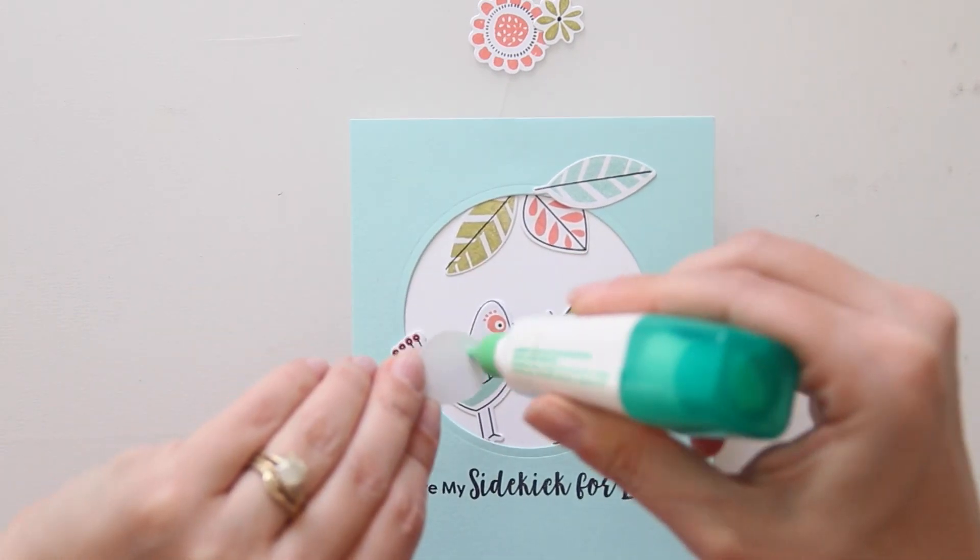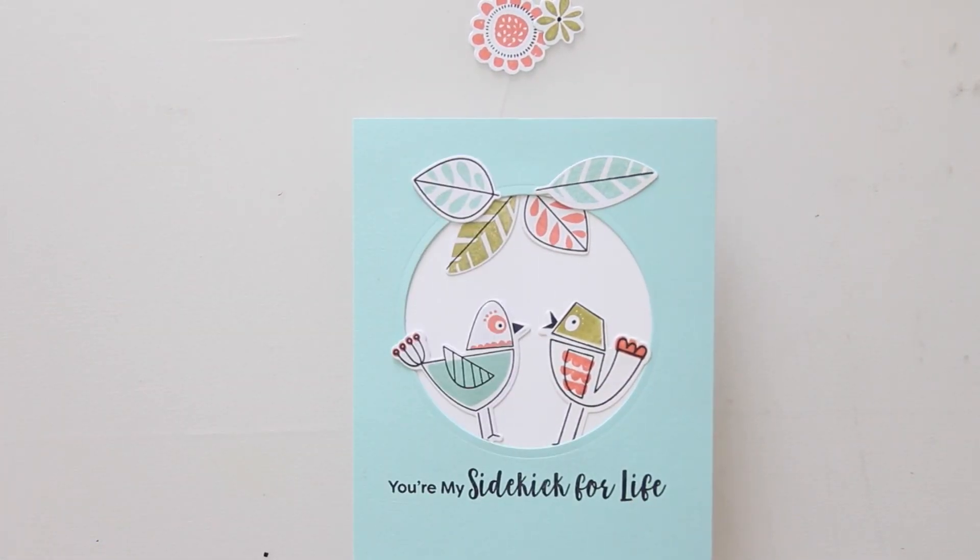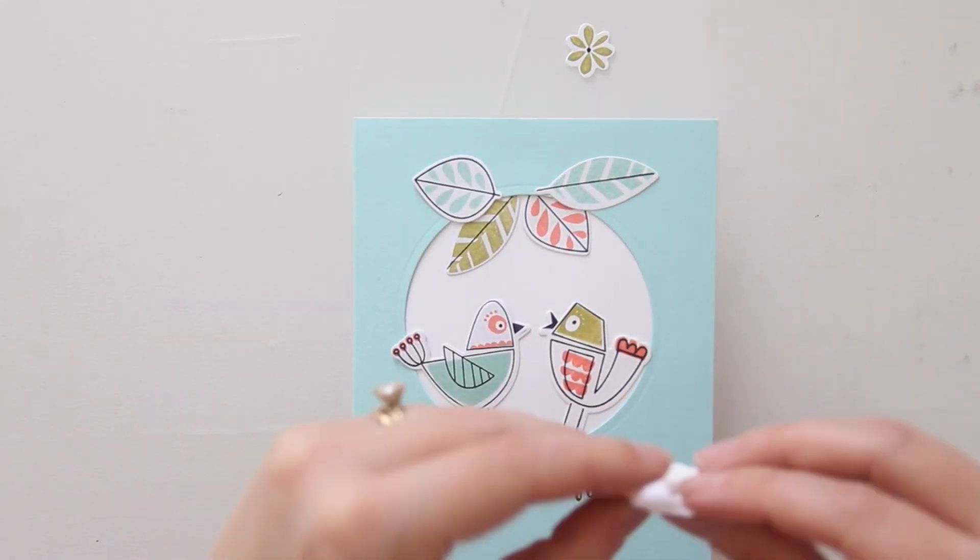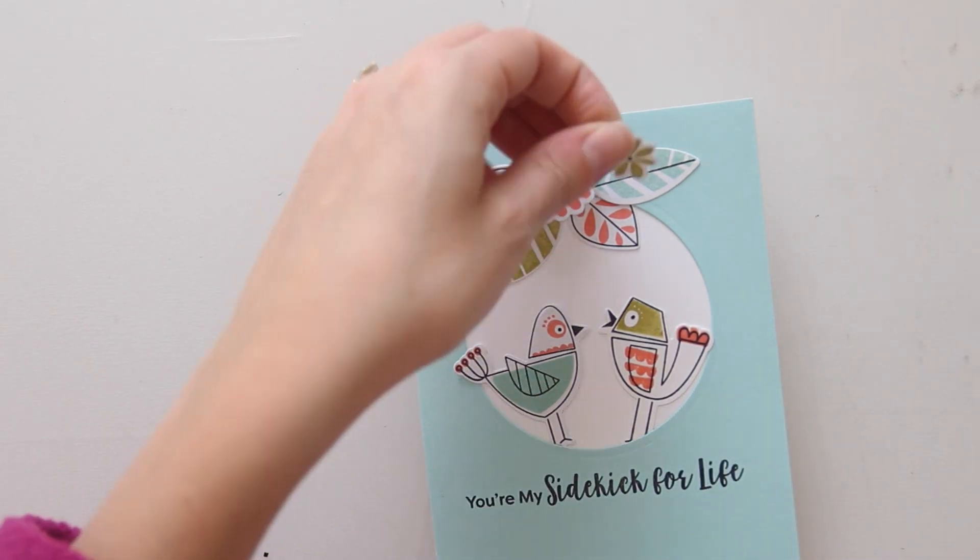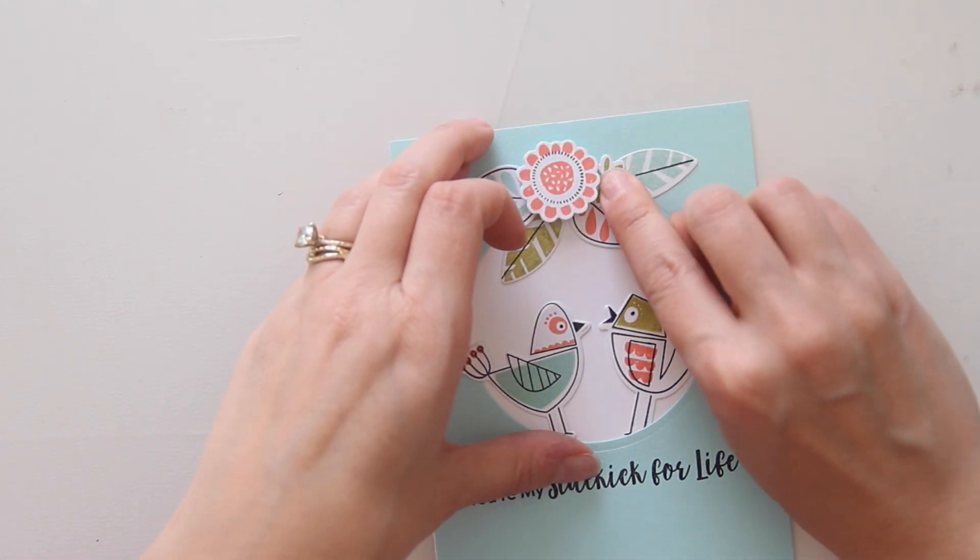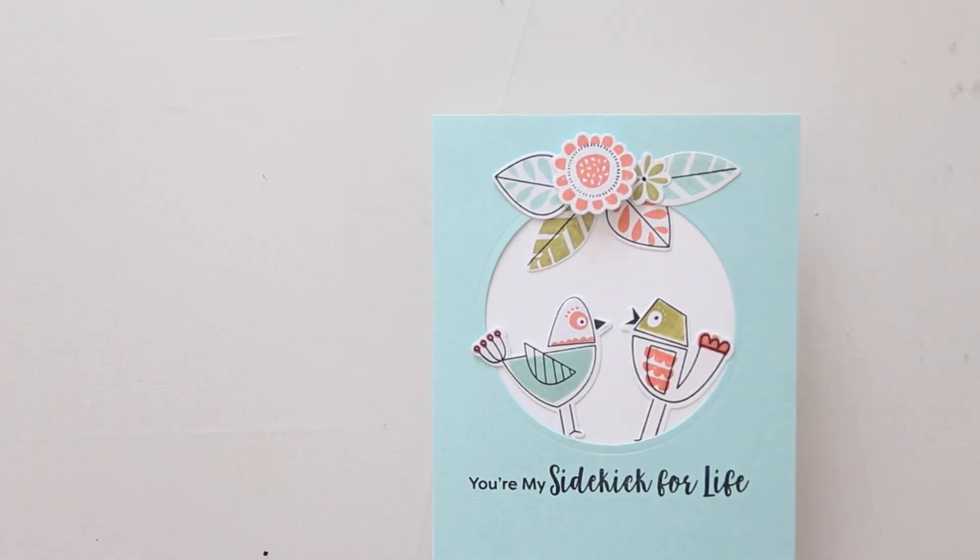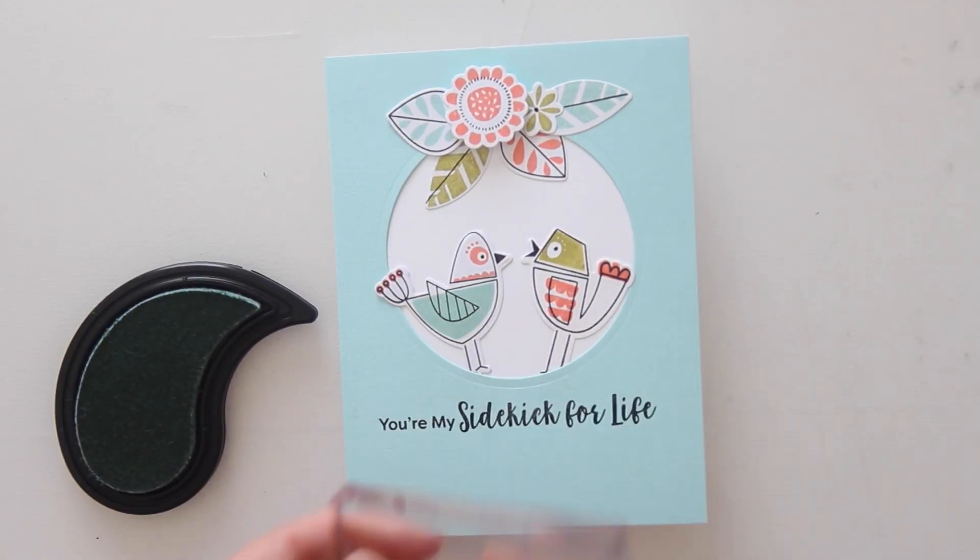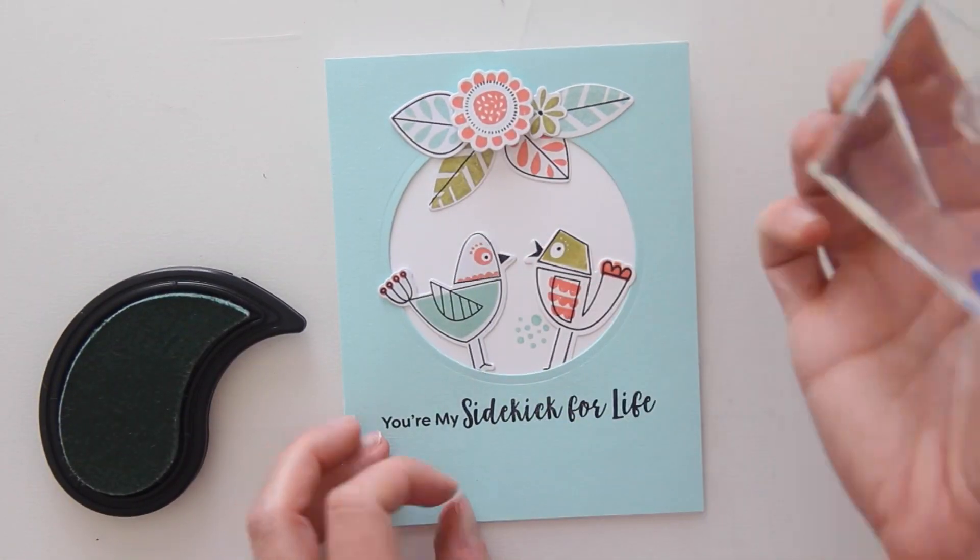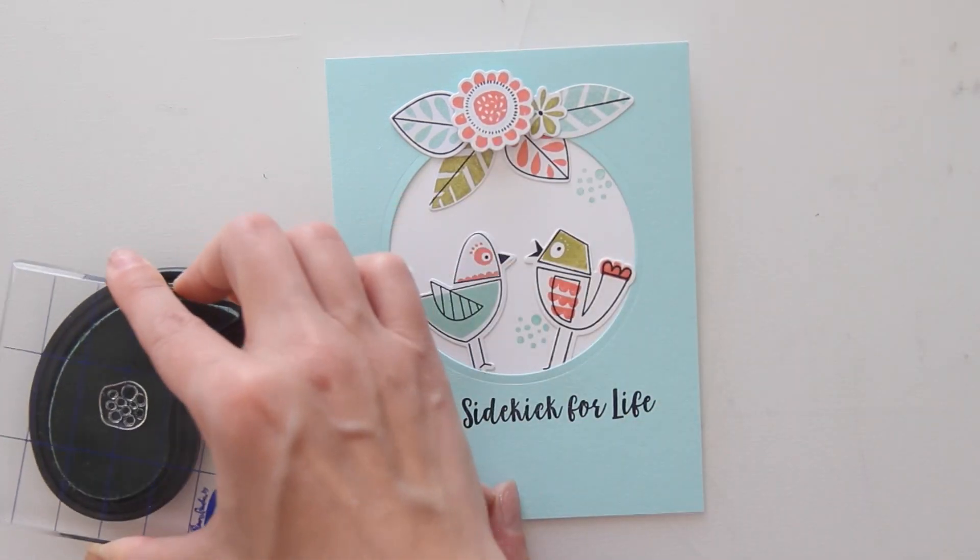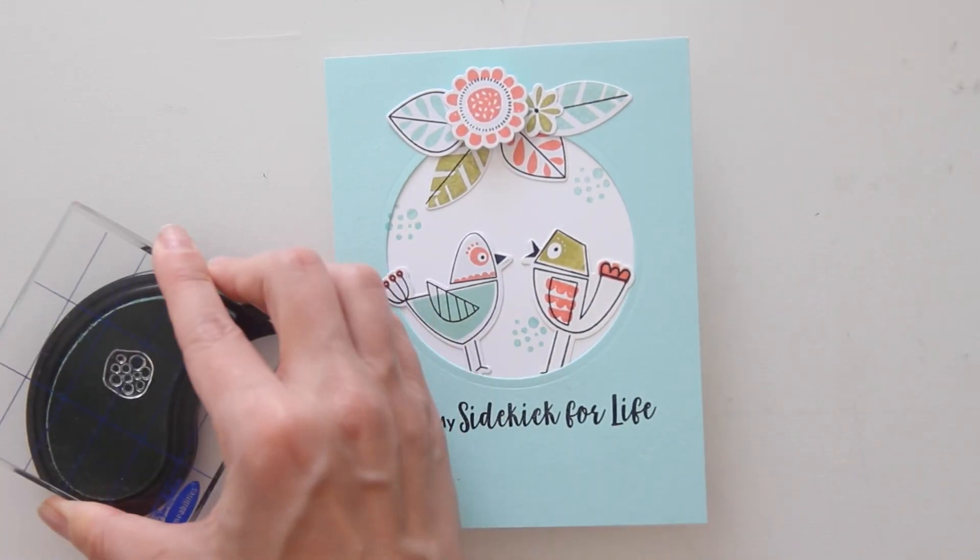There's an extra little stamp that comes in this stamp set, and it's just some polka dots. I decided to add some texture into the plain white background. I would stamp that in the same color of blue ink I had been using, and that just gave it a little bit of life, and just some nice variety in that blank space.